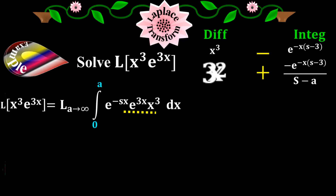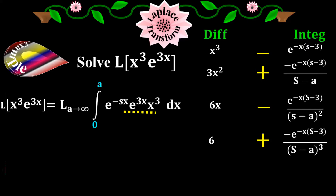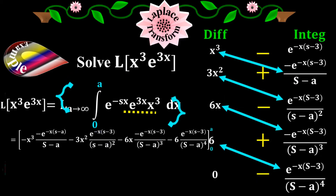Continuing: the derivative of 3x squared is 6x, and the integration of minus e to the minus x(s minus 3) over (s minus 3) equals e to the minus x(s minus 3) over (s minus 3) squared. Then the derivative of 6x is 6, and the integration gives minus e to the minus x(s minus 3) over (s minus 3) cubed. The derivative of 6 is 0, and the integration gives e to the minus x(s minus 3) over (s minus 3) to the 4. I stop here because the differentiation side reached 0. Now take the cross product between these terms.